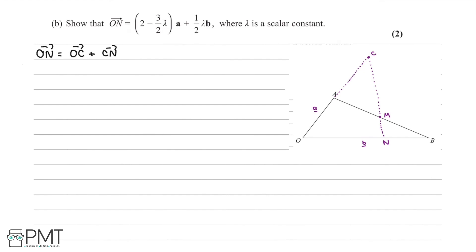We need to break this down further. We first express OC in terms of a. We recall that OA is a, so therefore OC is going to be 2a, given the information at the start of the question that OC equals 2 OA. So the vector OC is equal to 2a.